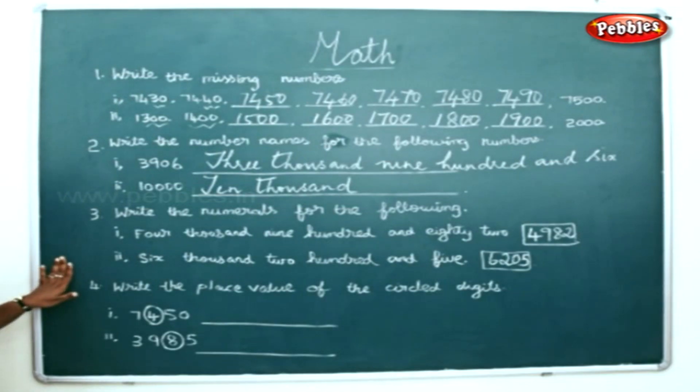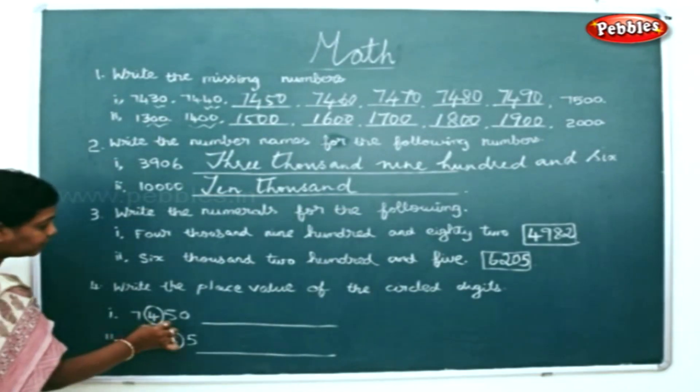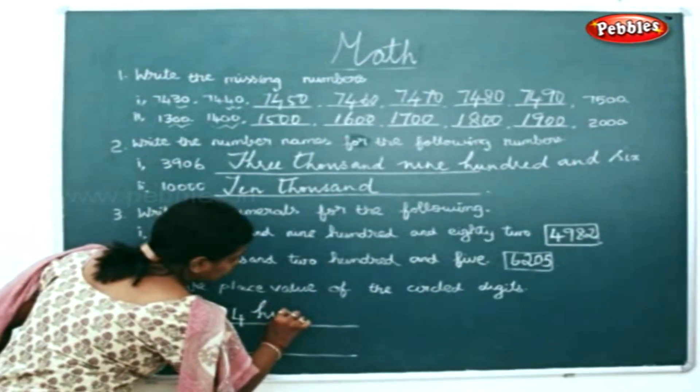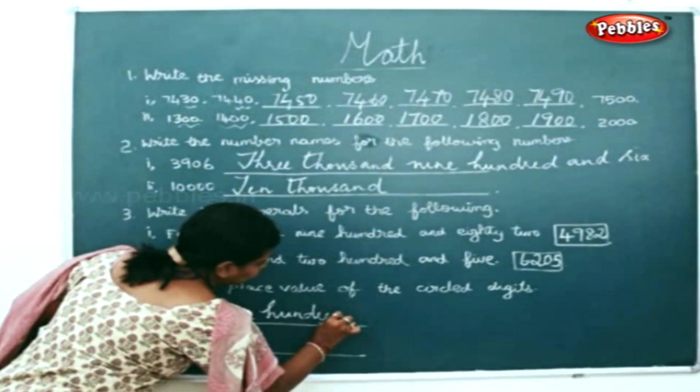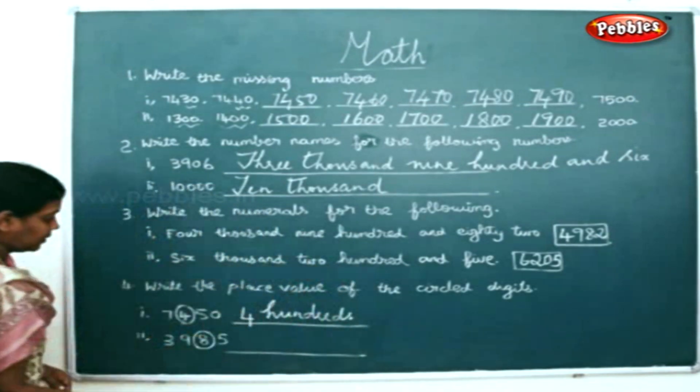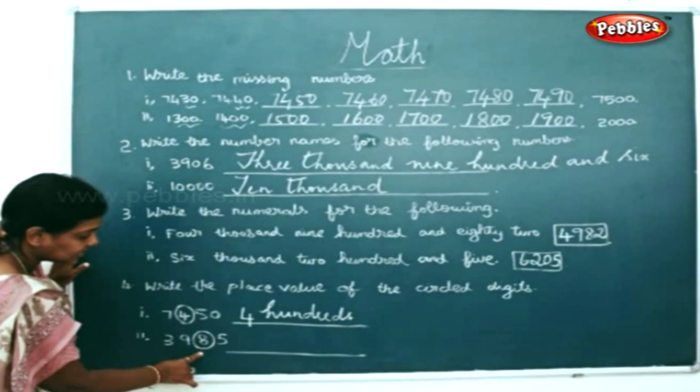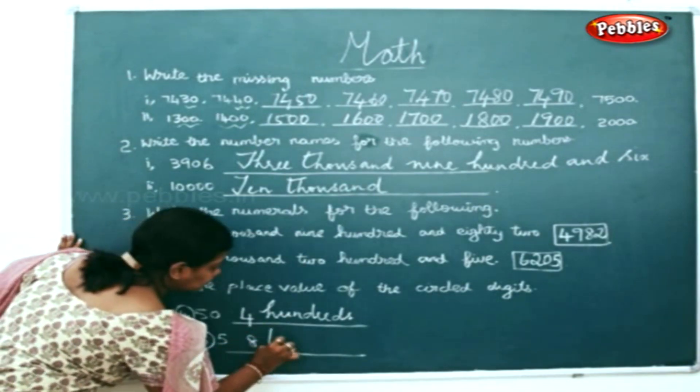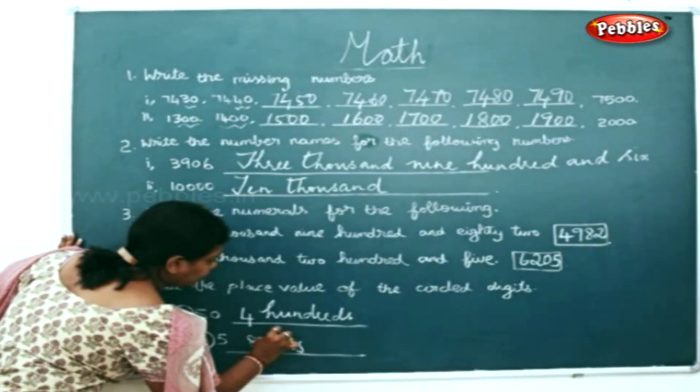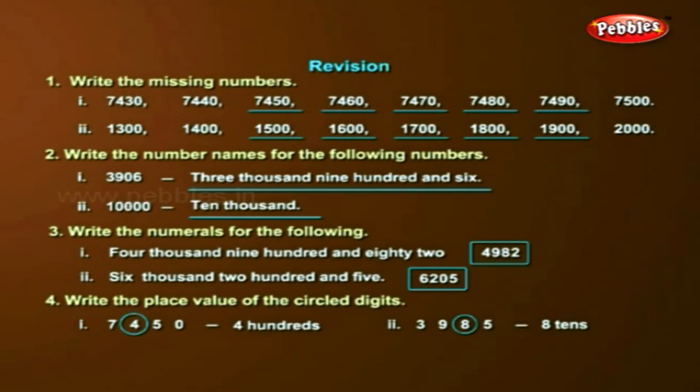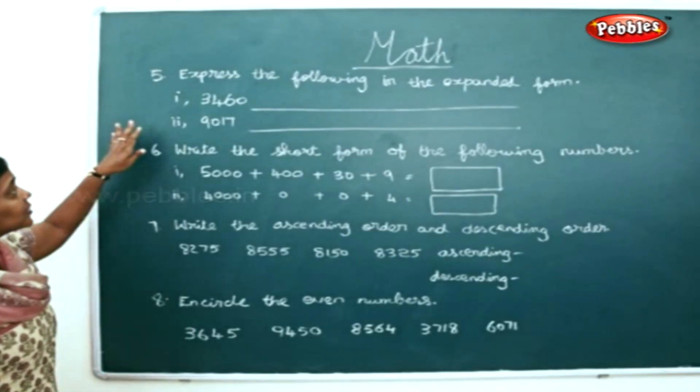For which place is this? In hundreds. This is in ones, tens - eight tens. Now express the following in expanded form.